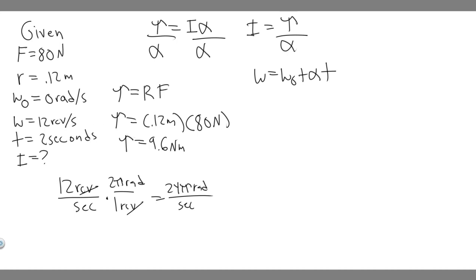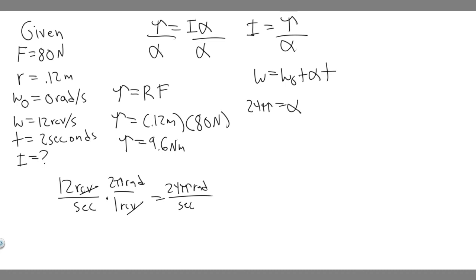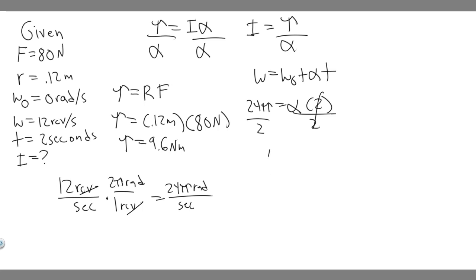Now plugging in: omega is 24 pi, omega-zero is zero, and t is two seconds. So 24 pi equals alpha times 2. Dividing both sides by 2 gives alpha equals 12 pi radians per second squared.